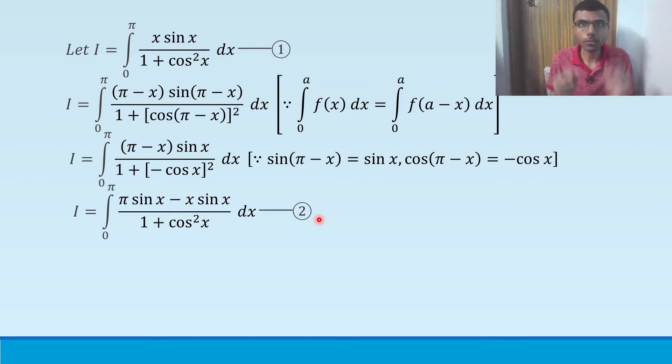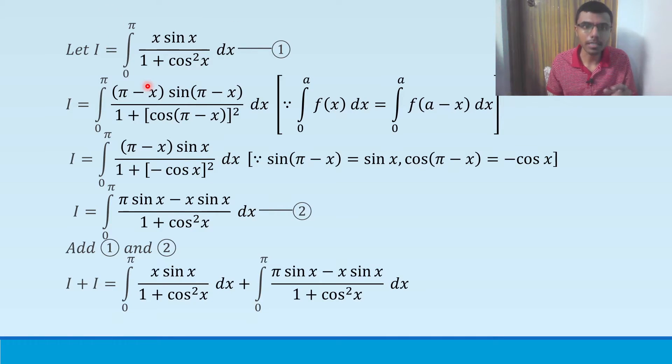Now what we need to do is we need to add the first and second equation. In the LHS of 1 I have I. Here also I have I. So I plus I, I will get. In the RHS, these two would come. This is the first integral plus this is my second. I hope you are clear up till now.